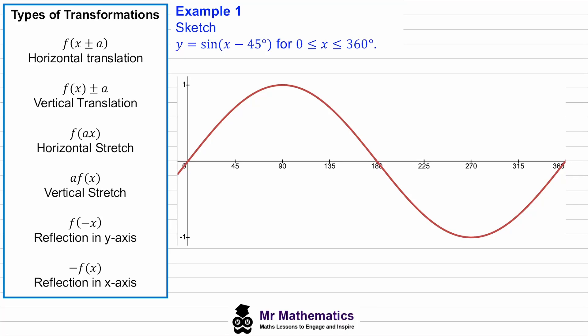Hi everybody. In this video we're going to look at transforming trigonometric graphs. I covered each of these transformations in a previous video, but in this video we're going to look at how they apply specifically to the sine and cosine graphs. So if we look at example one, we've been given the graph of sine x and we've been asked to sketch y equals sine of x minus 45 within the range of 0 to 360.